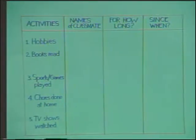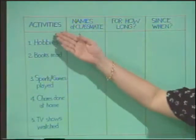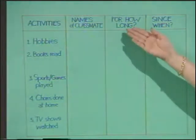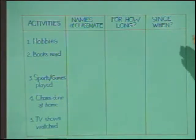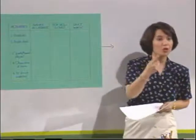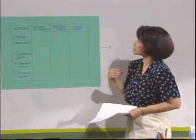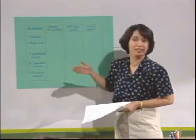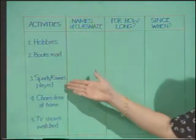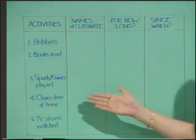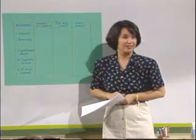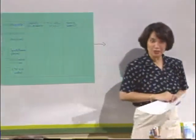You will see listed here: first column, activities; names of classmates; then how long, for how long, since when. You will go around and interview your classmates to find out about their hobbies, books read, sports or games played, chores done at home, and TV shows watched. Do you understand what you're supposed to do?